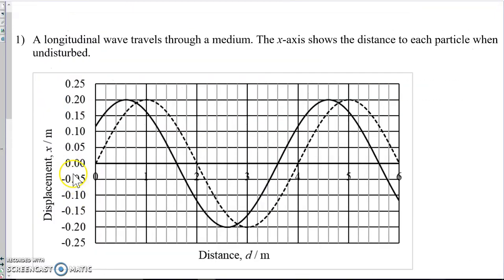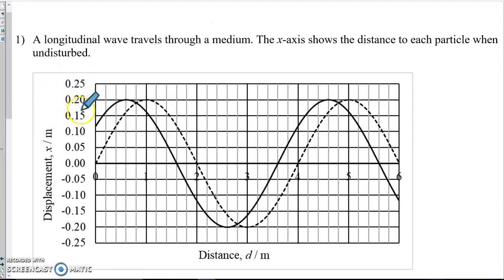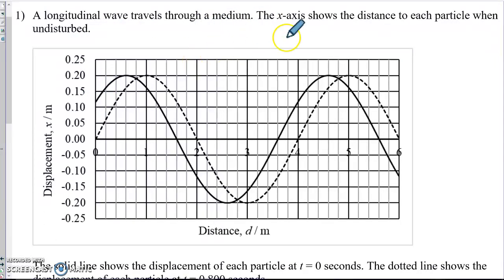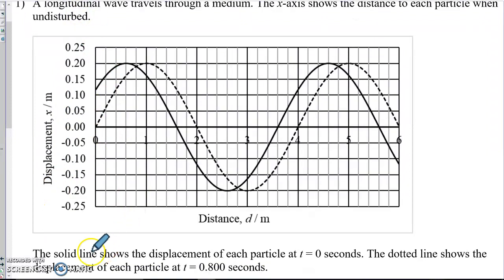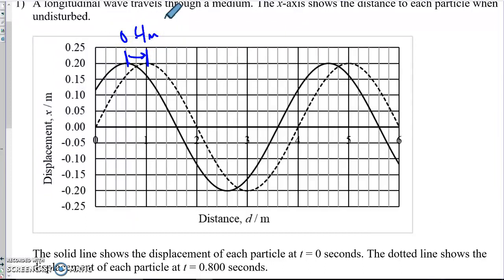As our final item, let's look at just the first part of this question in our notes. This is on page 17. A longitudinal wave travels through a medium. The x-axis shows the distance to each particle when undisturbed. And the y-axis is showing the displacement. The solid line shows the displacement of each particle at zero seconds. The dotted line shows the displacement at t equals 0.8 seconds. So before we do any problem solving, we can already see that this wave has traveled, the crest was here, and now the crest is there. Energy has been carried forward. How far forward? You just look at the x-axis. This is going to be 0.4 meters forward, is how far the energy has gone. How long did it take for that energy to transfer forward, for the crest to move forward? It took 0.8 seconds.